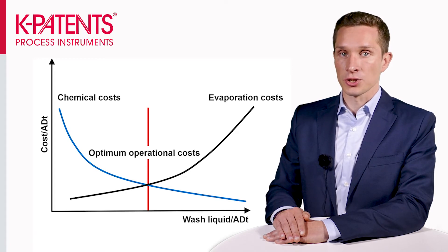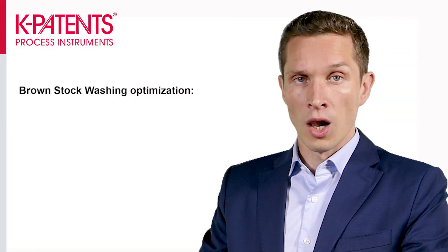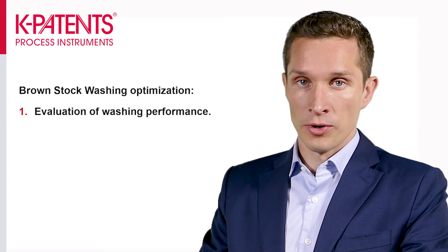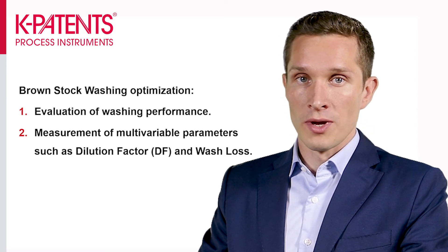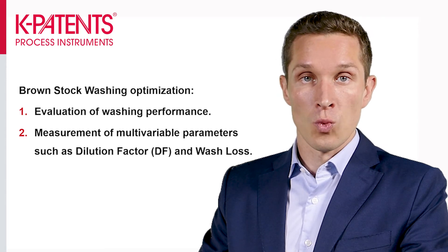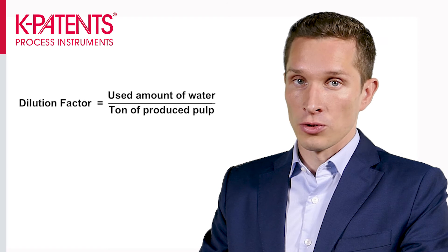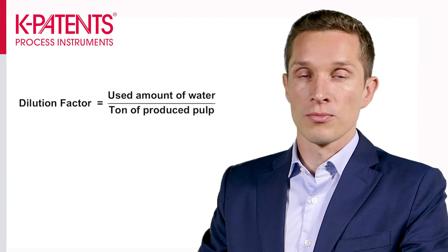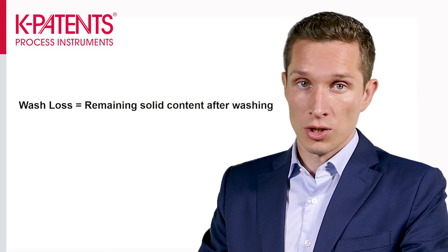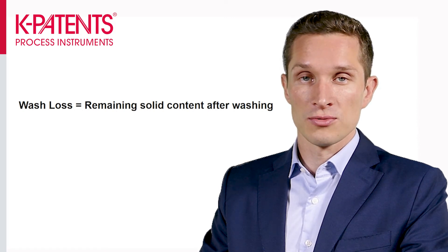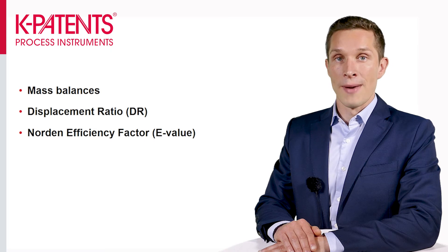By optimizing the line operation, the mill guarantees the best economic and environmental performance. So how is brown stock washing optimized? First we need to measure and evaluate the washing performance. This is done by using multi-variable parameters. The two principal parameters to measure are called dilution factor and wash loss. The dilution factor indicates the used water amount per ton of pulp. Wash loss is the dissolved material or dissolved solids which were not removed in the washing but instead continued to the bleaching stage.